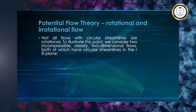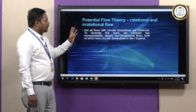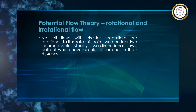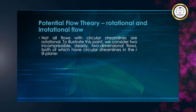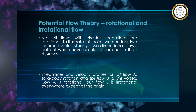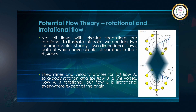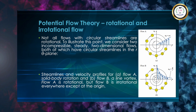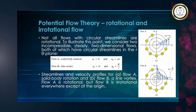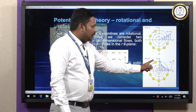We have the potential flow theory covering rotational and irrotational flow. Not all flows having circular streamlines are said to be rotational; it has been rotated with respect to the r-theta plane. Here we have the streamlines and velocity profiles of condition A and condition B. Flow A has fluid that is spinning around and also turning. Flow B has fluid that is stationary but spinning.